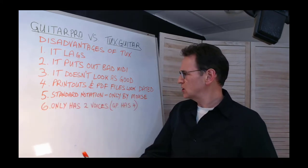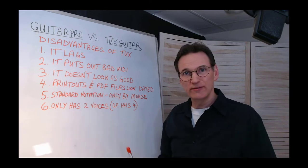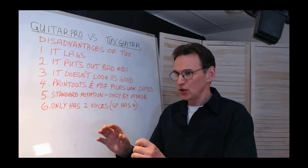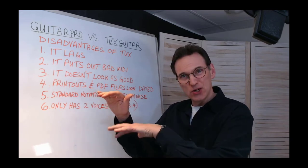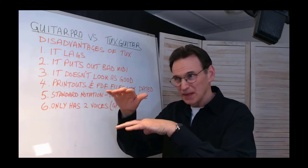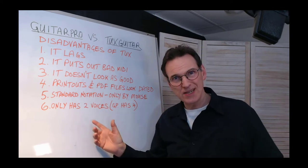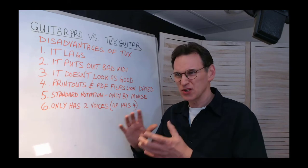Next point: GuitarPro has four voices whereas Tux only has two voices. What that means is when you're writing the music, you could have one line where a note sustains and you have an arpeggio going on underneath it, and you can give those note values separate note values.